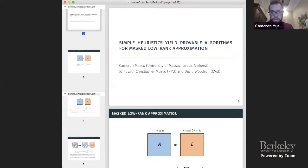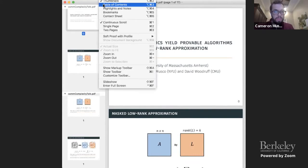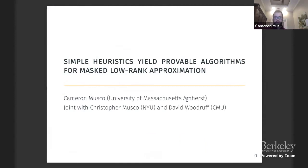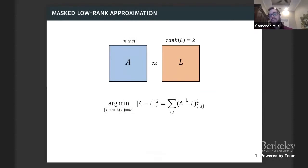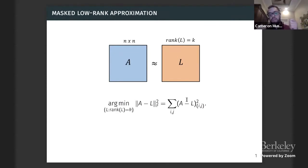Next, we're going to be talking about low-rank approximation. I'm going to be talking about simple methods for the masked low-rank approximation problem. This is joint work with Chris Musco and David Woodruff. We're looking at low-rank approximation: I have an N by N matrix A and want to approximate it by an N by N matrix L that only has rank K, typically to compress A or to denoise it. A common metric is to minimize the Frobenius norm difference — the sum over all entries of the squared difference between A and L.